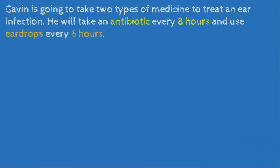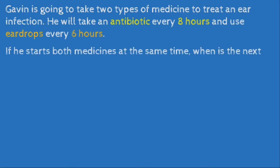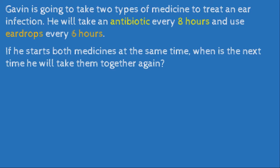Now a word problem: Gavin is going to take two types of medicine to treat an ear infection. He will take an antibiotic every 8 hours and use ear drops every 6 hours. If he starts both medicines at the same time, when is the next time he will take them together again?